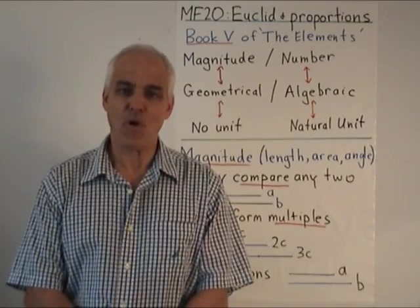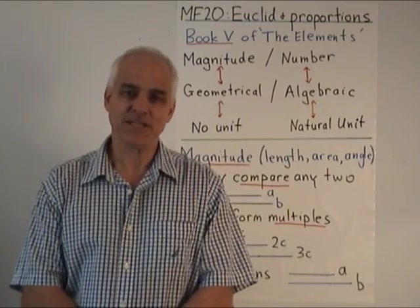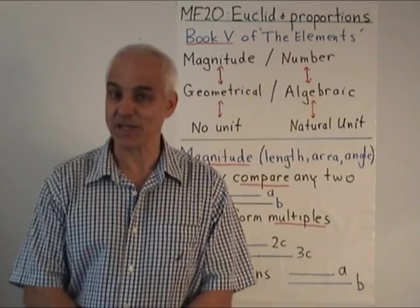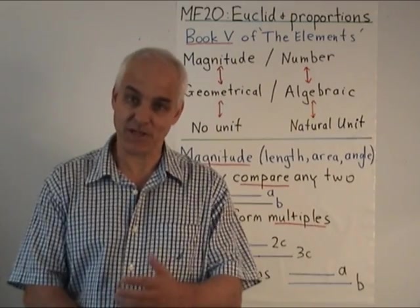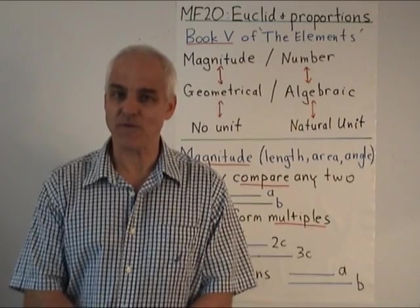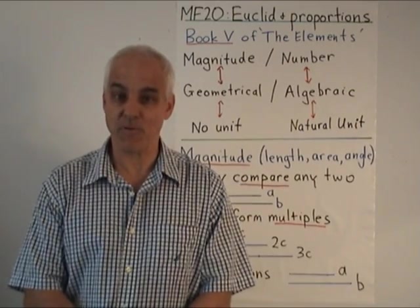Good day. I'm Norman Wahlberg, and in this part of a series of foundational issues on mathematics, and in particular geometry, we're going to look at book five of Euclid, which deals with proportions.